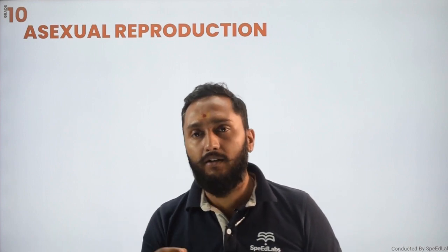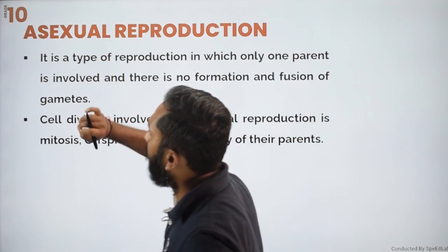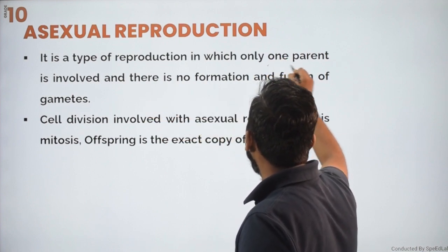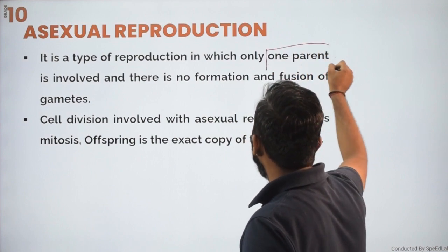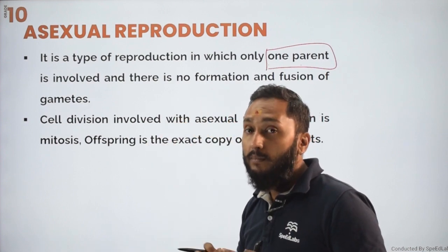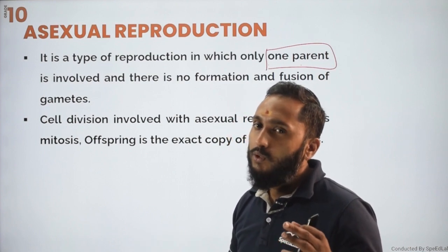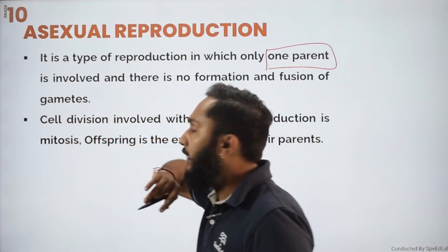Asexual reproduction is a kind of reproduction, but how is it different from sexual reproduction? With the name itself, you can understand — only one parent is involved here. This single parent will not have any specific gender. In organisms where you will not find any separation in gender, you will be able to see this kind of asexual reproduction. No gamete formation is going to take place.